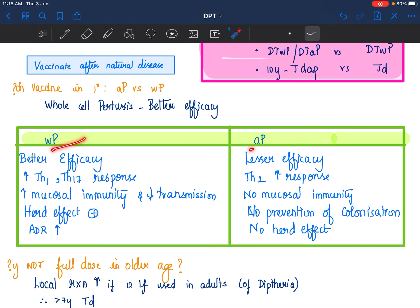The difference between whole cell and acellular are these. Whole cell better efficacy. It has got increased Th1 and Th17 response. So, what happens is when you have a T helper 1 cell response, there are local immunity also is increased. Mucosal immunity is better.